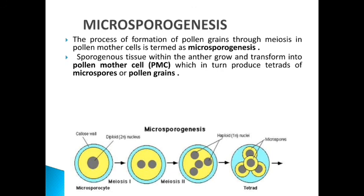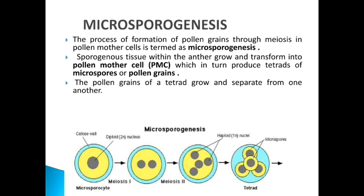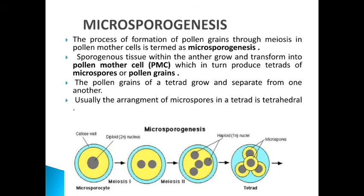Through meiosis I, the diploid nucleus divides; then meiosis II occurs, producing four haploid nuclei. After this process, a tetrad is formed — these are microspores, which we may also call pollen grains. The pollen grains of a tetrad grow and separate from one another. Usually the arrangement of microspores in a tetrad is tetrahedral.